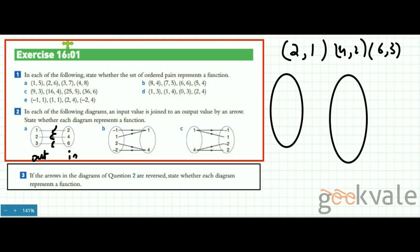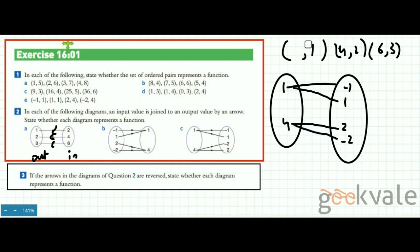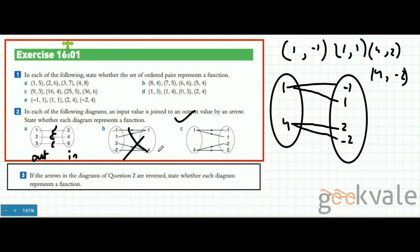For the second diagram, we had minus 1 and 1 on the input side, and 2 and minus 2 also on the input side, with 1 and 4 on the output side. After reversing, 1 maps to both minus 1 and 1, and 4 maps to both 2 and minus 2. The ordered pairs become (1, minus 1), (1, 1), (4, 2), (4, minus 2) — the domain is repeated, so it is no longer a function. Conversely, the diagram that was not a function before will turn into a function when you reverse the arrows — try it yourself.